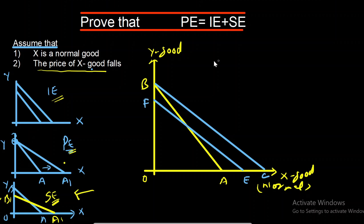We have now found all three effects on the graph. The two parallel blue lines show income effect. The two lines crossing each other show substitution effect. Price effect is shown when two lines are pivotal to each other. The initial budget line is AB and the new budget line BC represents the price effect — these two lines are pivotal to each other.